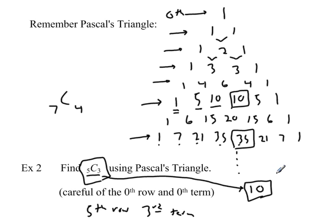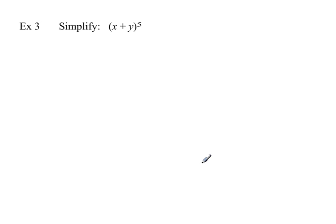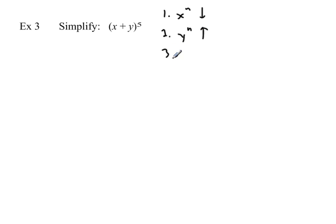Remembering Pascal's triangle leads us right to our shortcut using the binomial theorem. We want to know what x plus y to the fifth equals. The easy way is to realize three things are going on. First, the powers of x will go down with every term. Second, the powers of y will go up every term. Third, the coefficients follow Pascal's triangle.